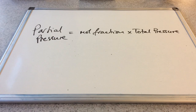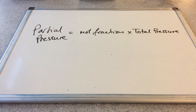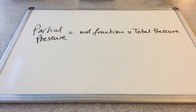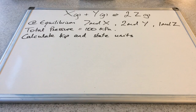The reason we calculate mole fractions is because we can use them to calculate the partial pressures of all the components in the mixture. The partial pressure of a component is equal to its mole fraction multiplied by the total pressure. Once we know all the partial pressures in the system, we can turn that into Kp, an equilibrium constant. So we'll put all of that into practice now with this question.